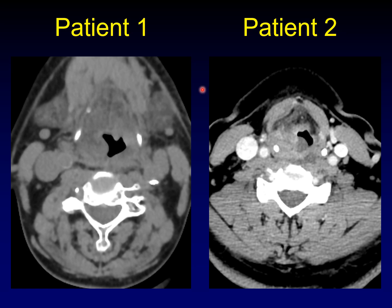What do they have in common? The most striking thing is the thickening of the soft tissues in the right supraglottis in both of these cases. Unfortunately, this one is non-contrast, but I think you'd find it looked a lot like this one overall.